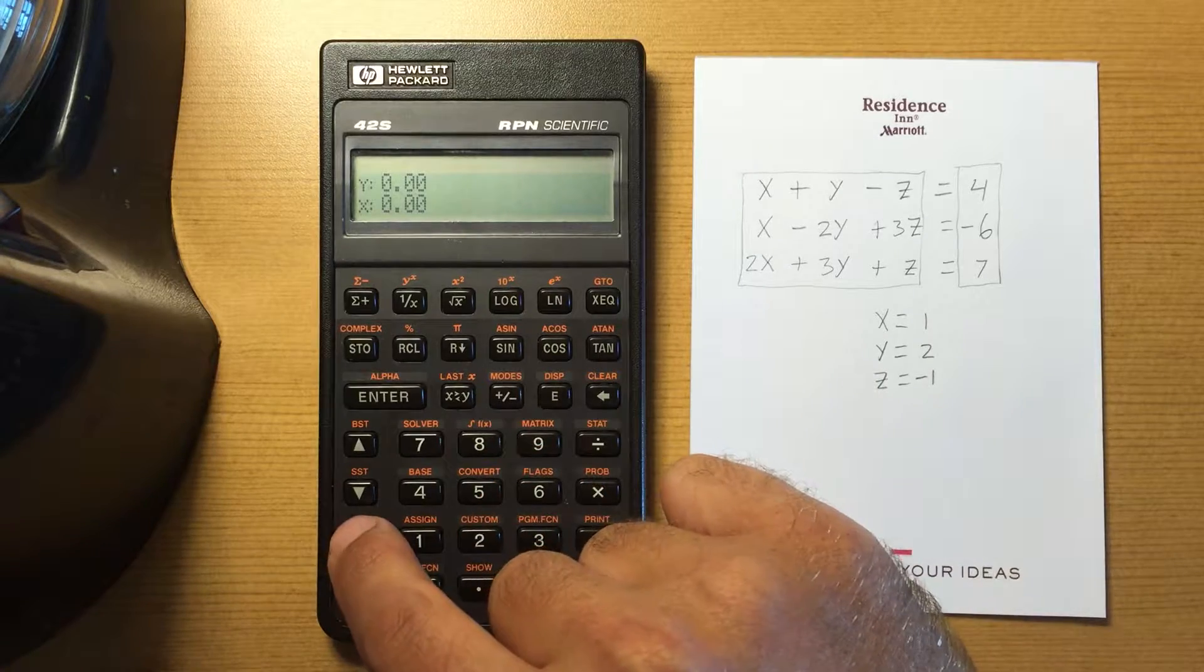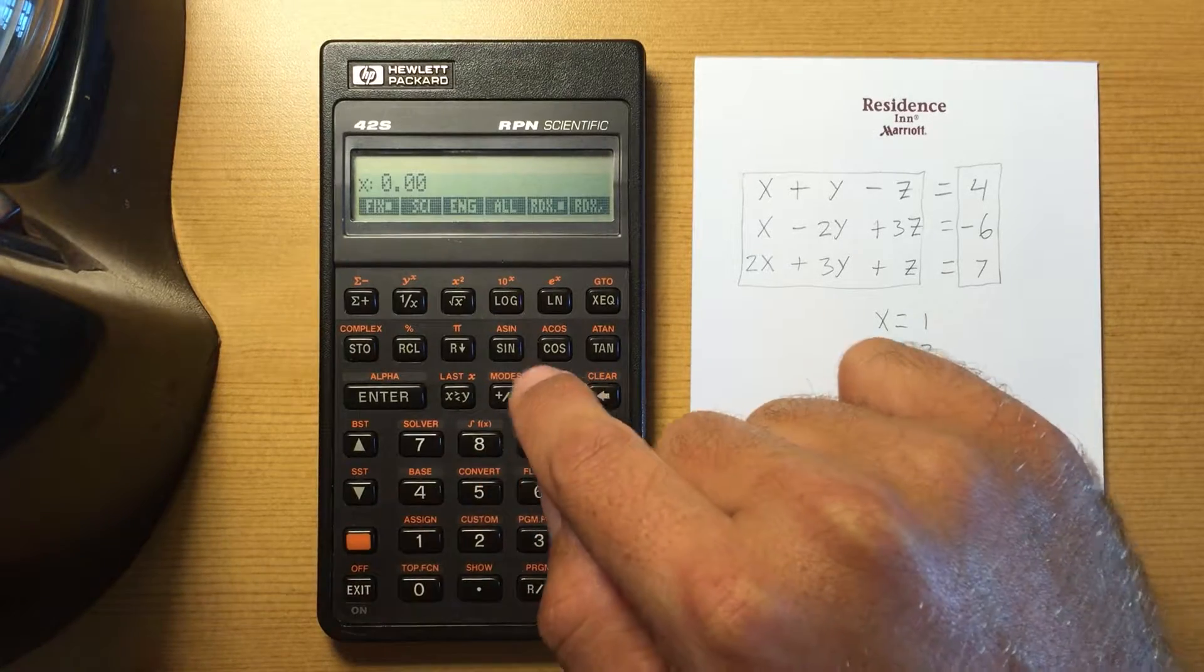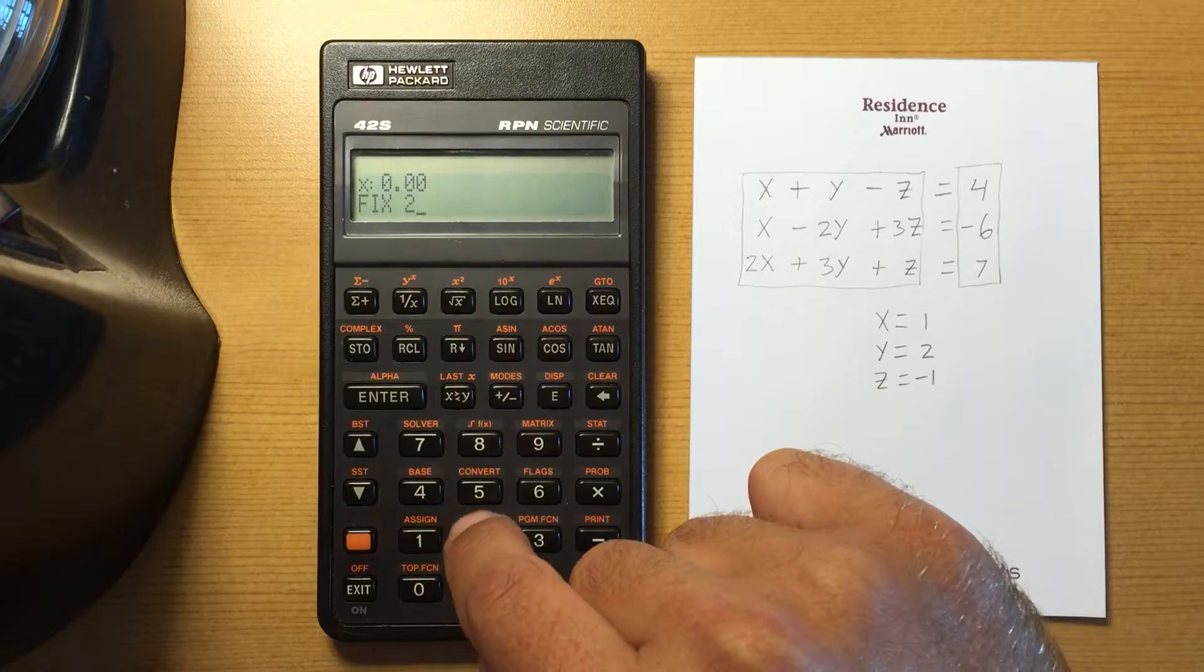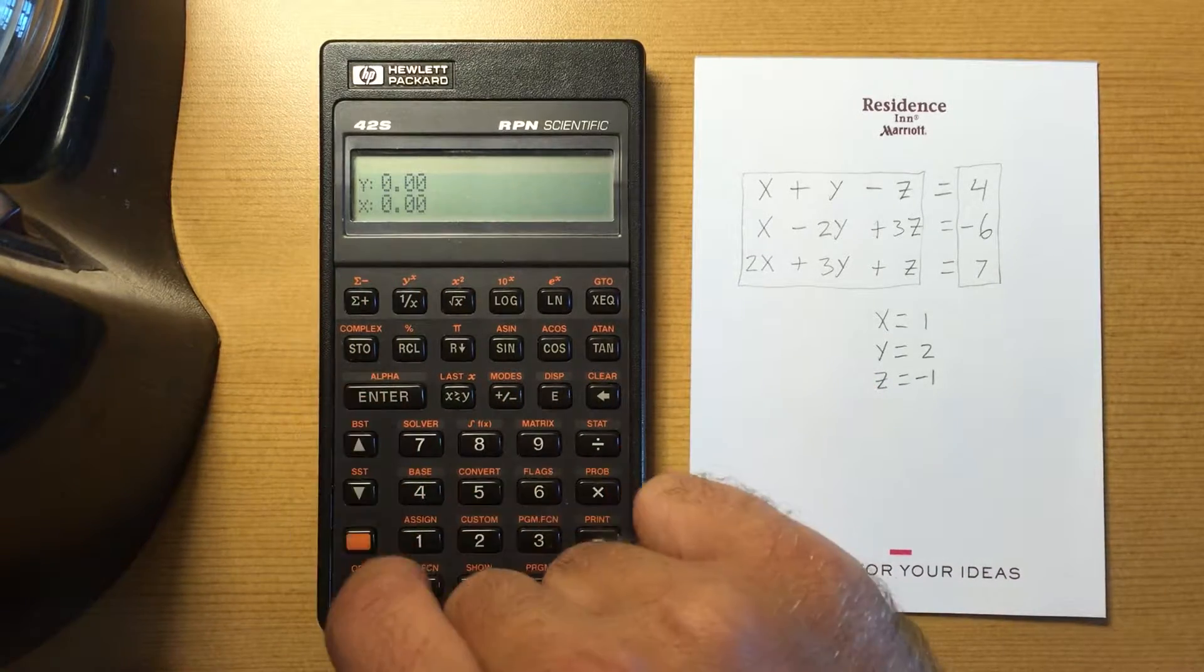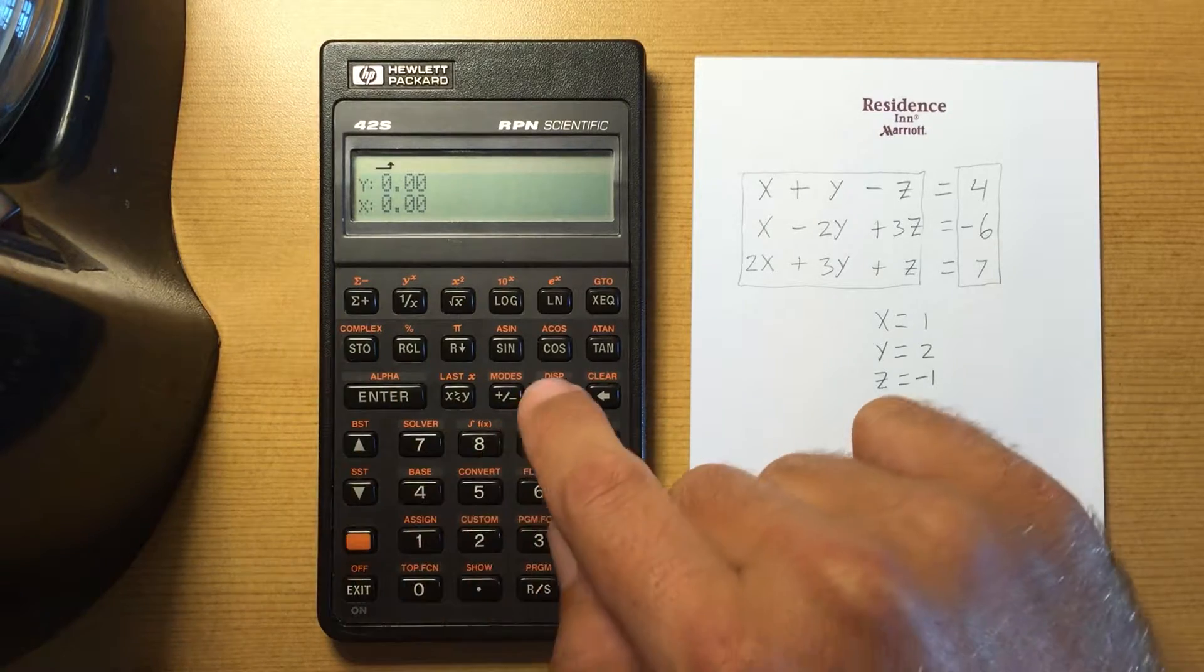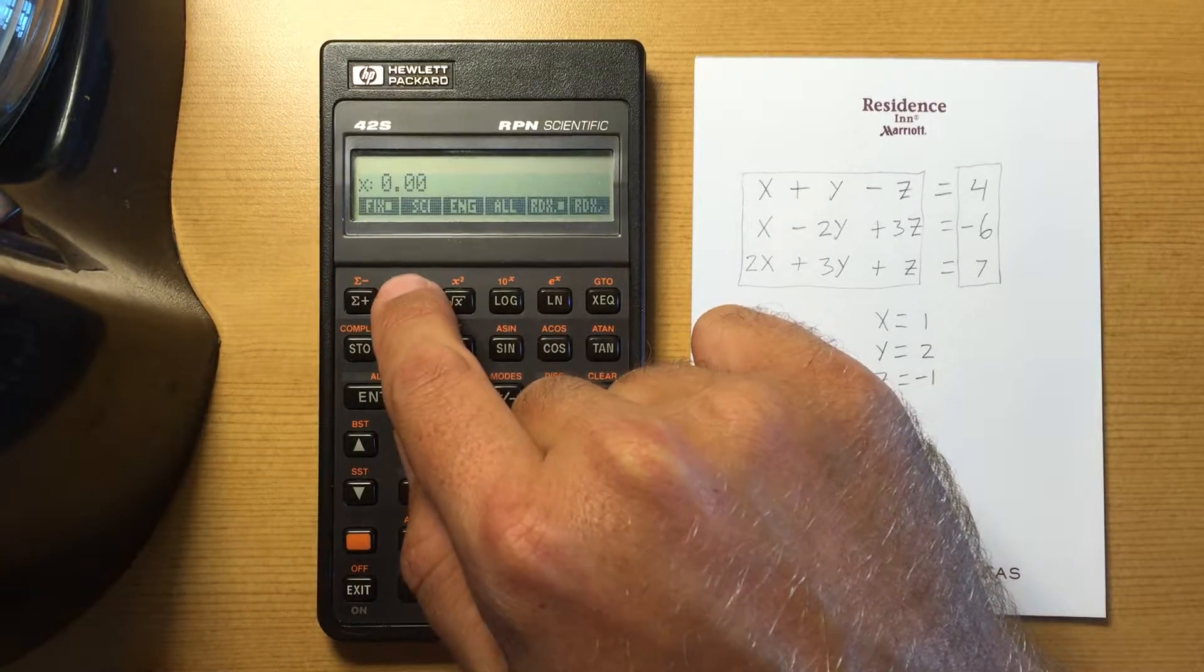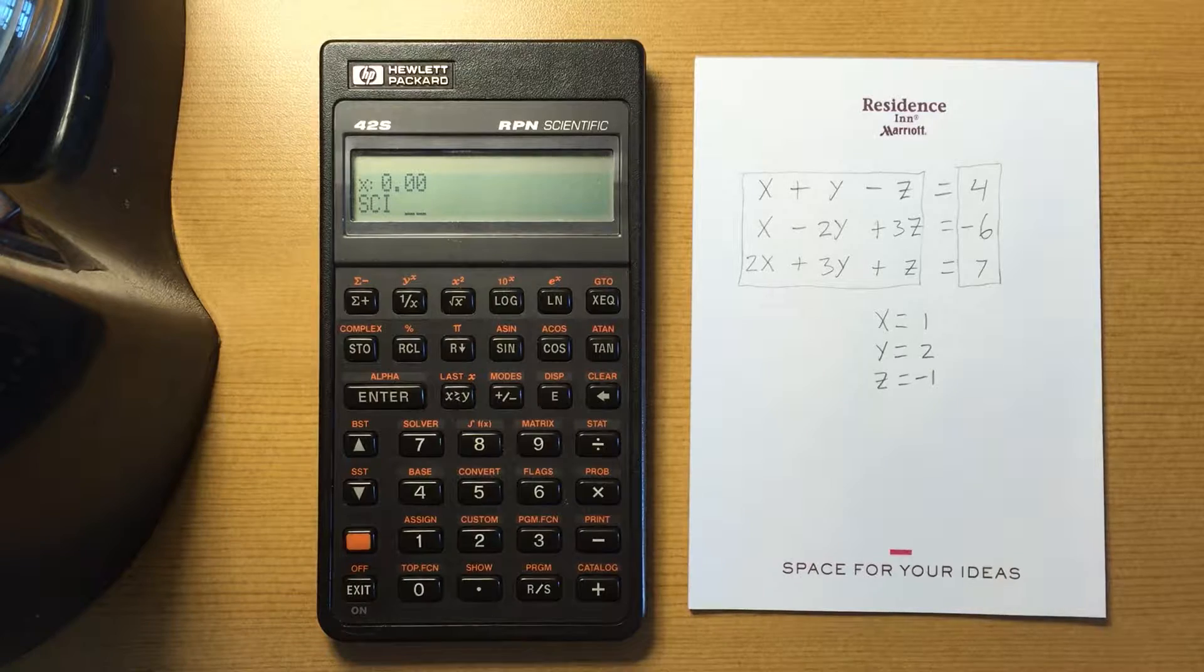Note that I can also change it to fixed, hit 2 and then enter. It takes in two digits, but if I hit 2 then it knows that I mean two. Scientific notation will always show one digit before the decimal point and then however many I specify after it.